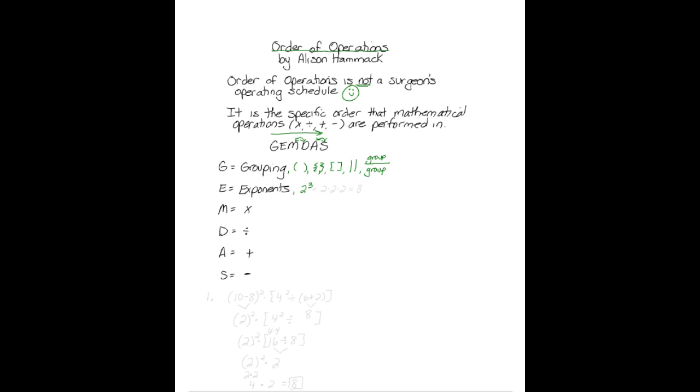E is exponents, such as 2 to the 3rd, which is expanded out to be 2 times 2 times 2, or 8. M is multiplication, D is division, A is add, S is subtract.